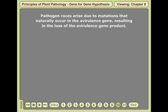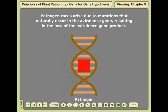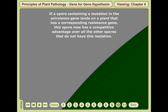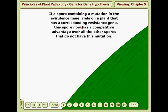Pathogen races arise due to mutations that naturally occur in the avirulence gene, resulting in the loss of the avirulence gene product. If a spore containing a mutation in the avirulence gene lands on a plant that has the corresponding resistance gene, this spore now has a competitive advantage over all the other spores that do not have this mutation.